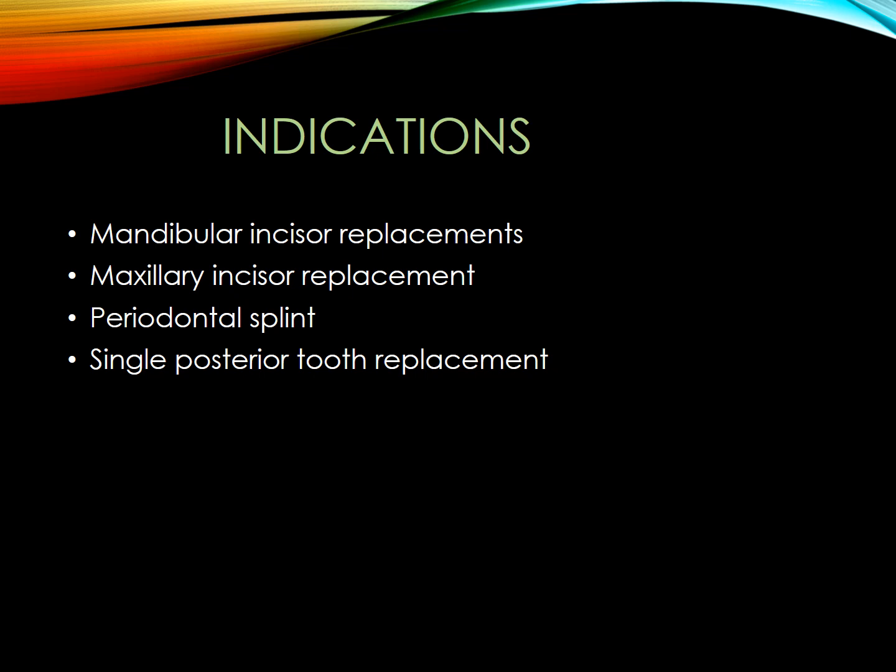Number three: periodontal splinting. The splinting of the periodontally involved tooth was the first use for resin-bonded fixed partial denture. So the first use was periodontal splinting. And finally, we can use it as a single posterior tooth replacement.